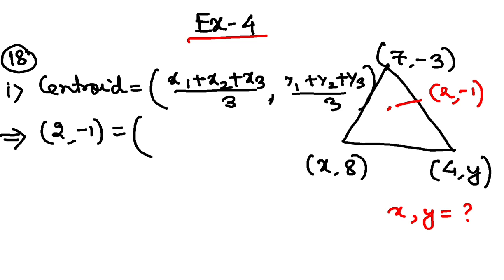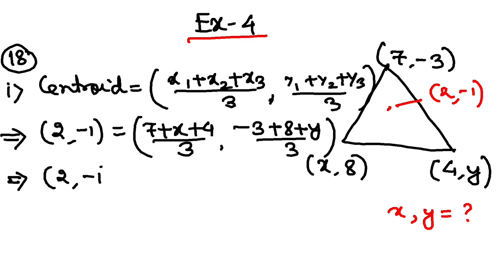So, x1 is 7. So, 7 plus x plus 4 by 3 and minus 3 plus 8 plus y by 3. That will give you 2 comma minus 1 is equal to 11 plus x by 3 and 5 plus y by 3.